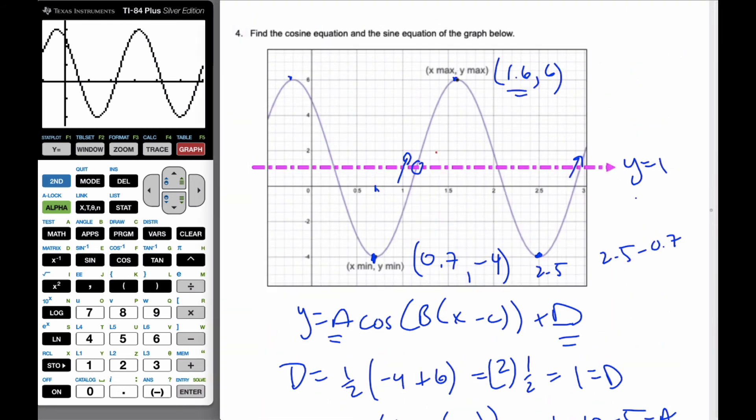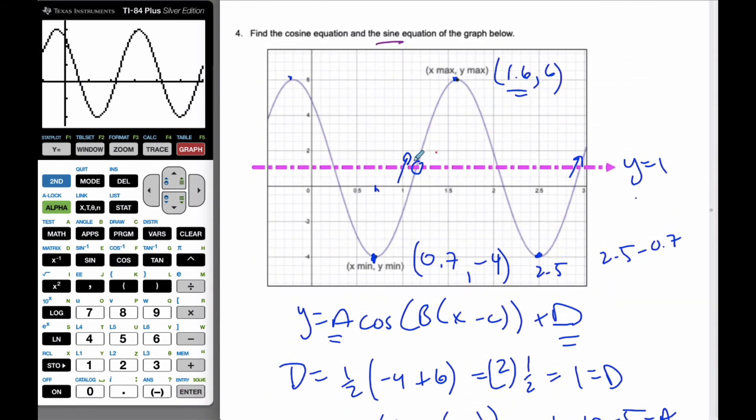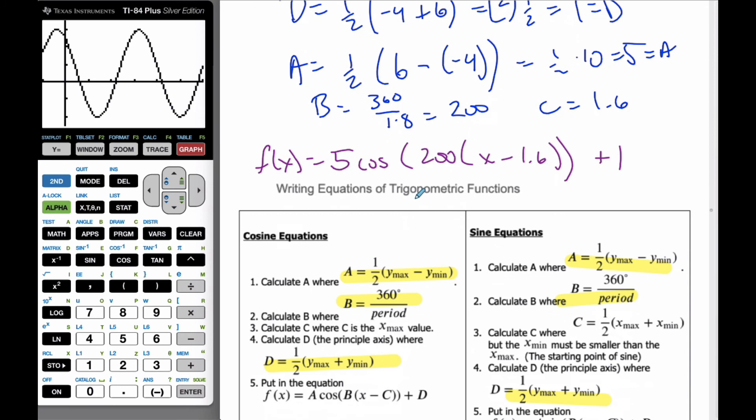That's cosine. Now we also are asked to find the sine curve as well. Well, when we look at this series of steps, if I look really carefully, I know that A value is the same calculation. The B value is the same calculation. The D value is also the same calculation. The only difference is C. And the C value, what we have to realize is we need to get the starting point for sine. And sine always starts in the principal axis going upwards, or this one here going upwards. That's the sine value. And so we're asked to find this particular x value for C.